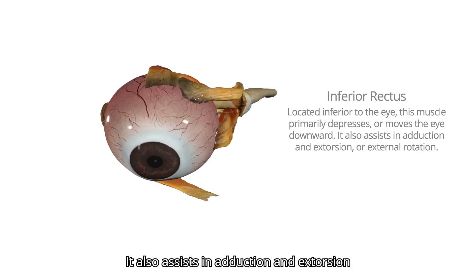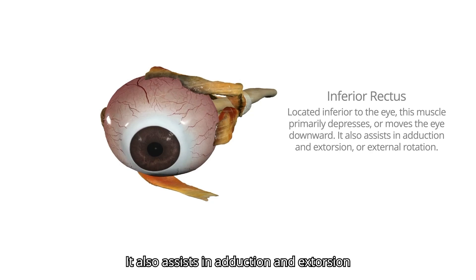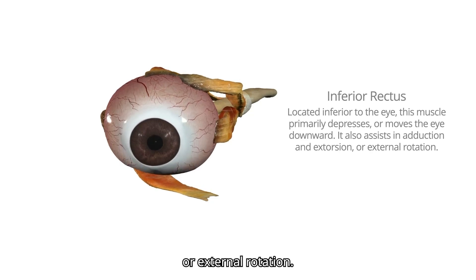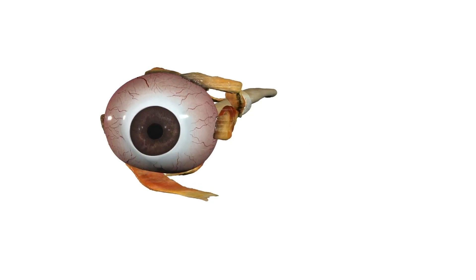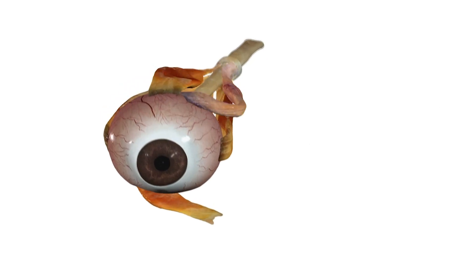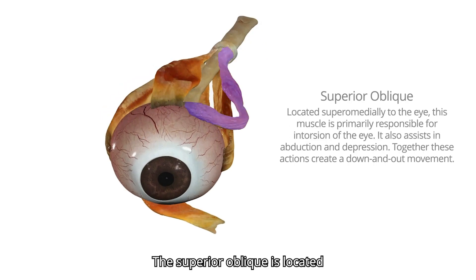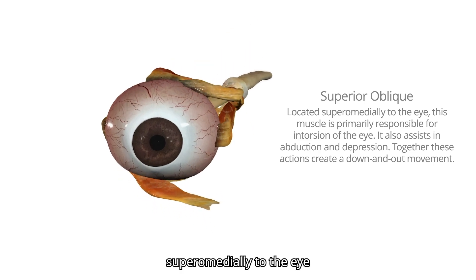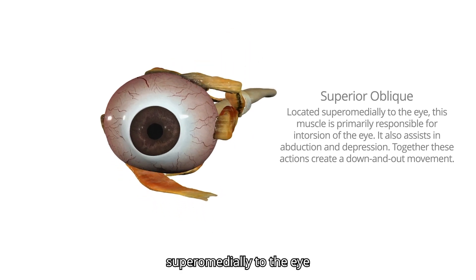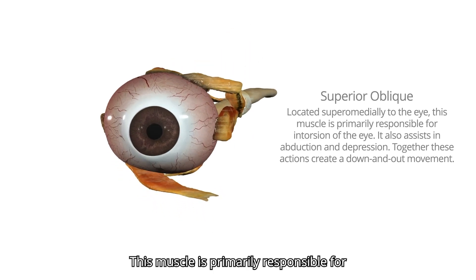The inferior rectus also assists in adduction and extorsion, or external rotation. The superior oblique is located superomedially to the eye. This muscle is primarily responsible for intorsion of the eye.